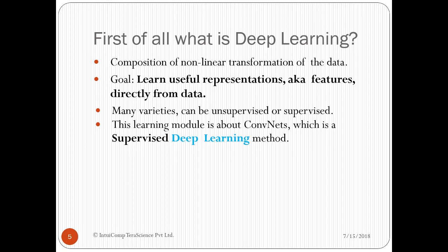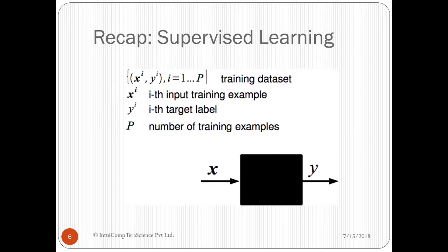Let's first recap neural networks before we move to ConvNets. In this figure, this black box represents a layer. X is the input to the layer. Y is output of the layer. X, Y, I from 1 to P, this is our training data set.